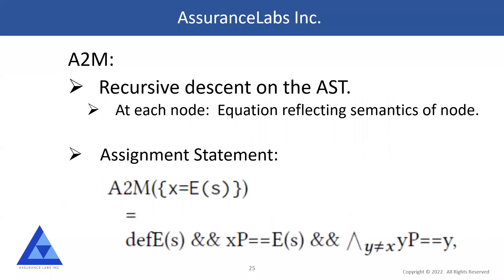How do we integrate this into computing the function of a program? For an assignment statement x = e(s), we generate a Mathematica equation that says: first, e can be evaluated at state s (e.g., if e is log then s must be positive; if e is square root then s must be non-negative); then xp = e(s); and all other variables are preserved. That is the equation we generate for an assignment statement.